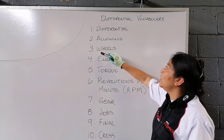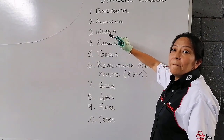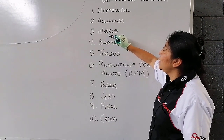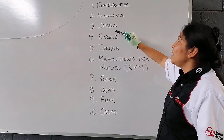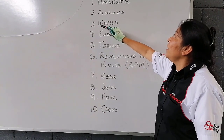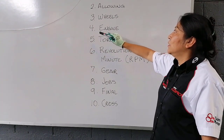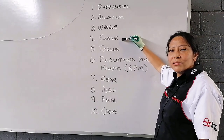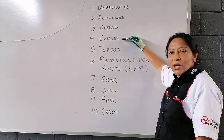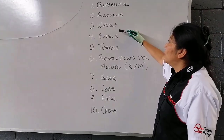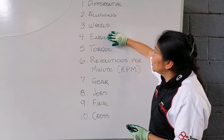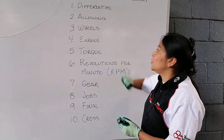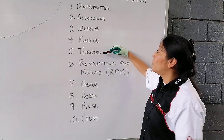Number three: wheels. Pay attention to the double E here — it sounds like a long E. Wheels. Number four: engine. Please don't say 'engine' with a hard ending — it is 'engine.' Remember that you don't have to pronounce the letter E at the end of words. Engine.